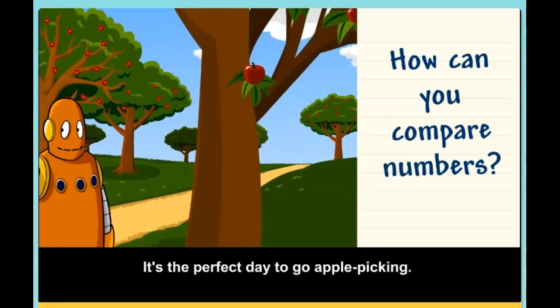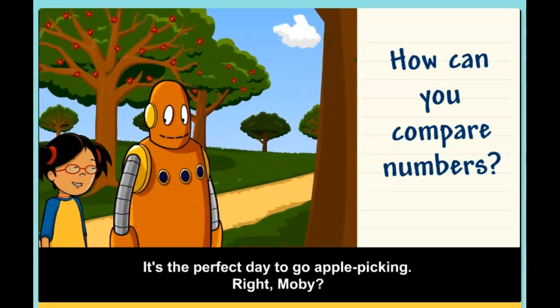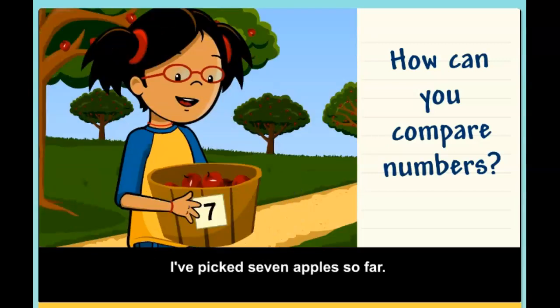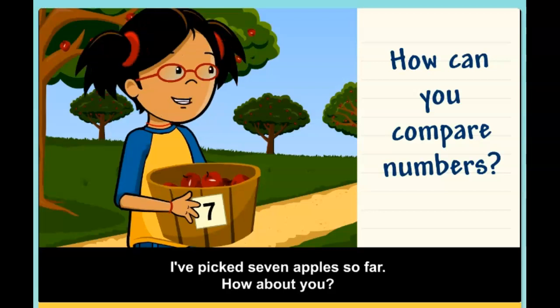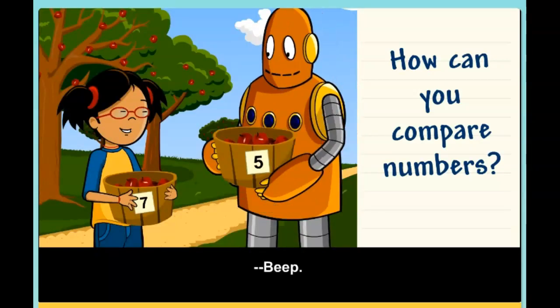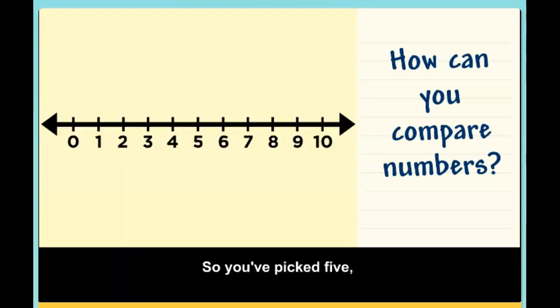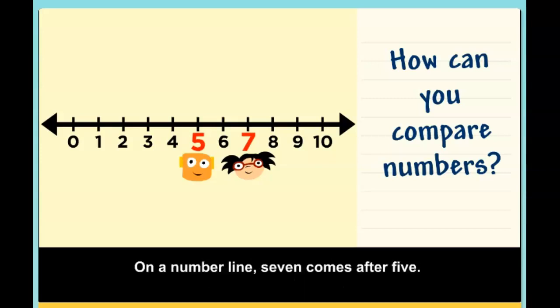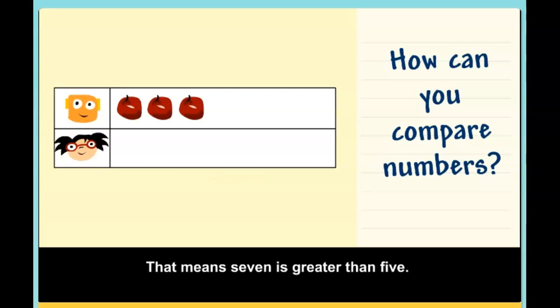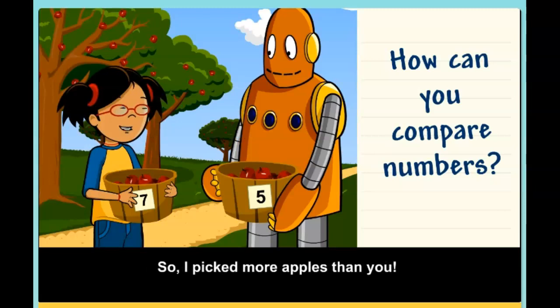It's the perfect day to go apple picking, right, Moby? I've picked seven apples so far. How about you? So you've picked five, and I picked seven. On a number line, seven comes after five. That means seven is greater than five. So I picked more apples than you.